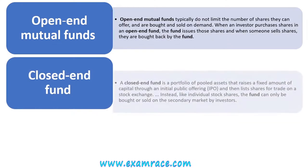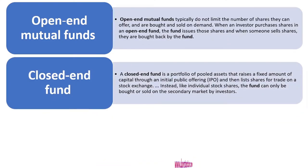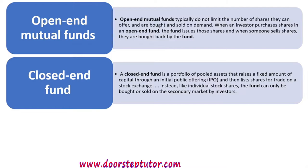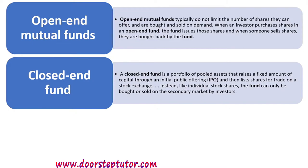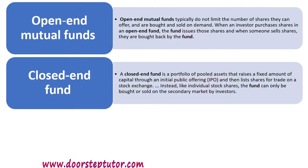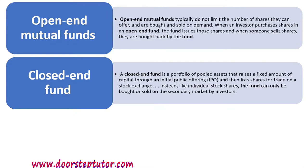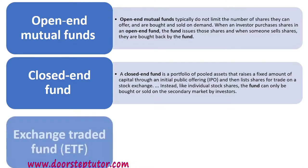Next is the close-end fund. It is a portfolio of pooled assets that raises a fixed amount of capital through an IPO, i.e., initial public offering, and then lists shares for trade on a stock exchange. Unlike individual stock shares, the fund can only be bought and sold on the secondary market by investors — there is no primary market here. It raises a pre-decided or fixed amount of capital through an IPO, and then the shares are listed on the stock exchange for trading purposes.